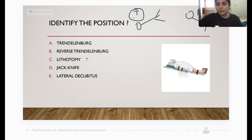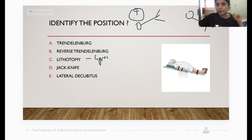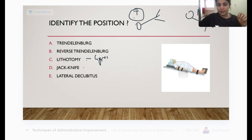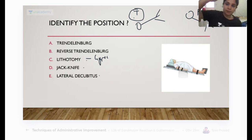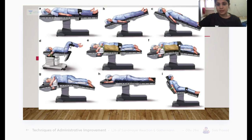Lithotomy position is used in gynecology — both legs are on stirrups. The favorite question about lithotomy: what is the most commonly injured nerve? It is the common peroneal nerve, because it is on the lateral side of the leg. Jackknife position is used for hemorrhoidectomy — one leg is over the other and the perineal area is exposed. Lateral decubitus means the patient is sleeping on one side.